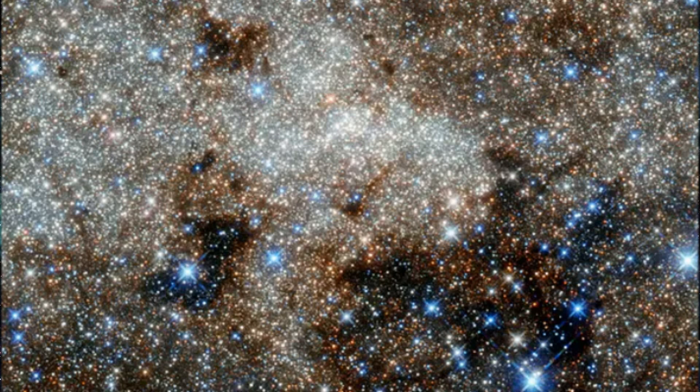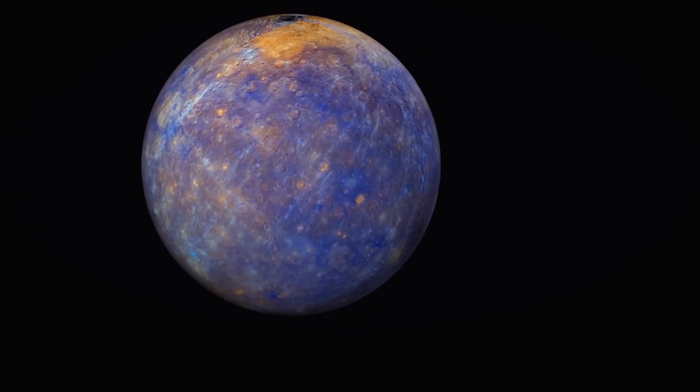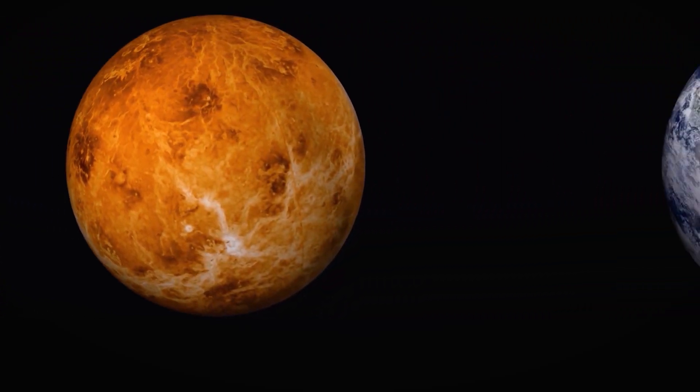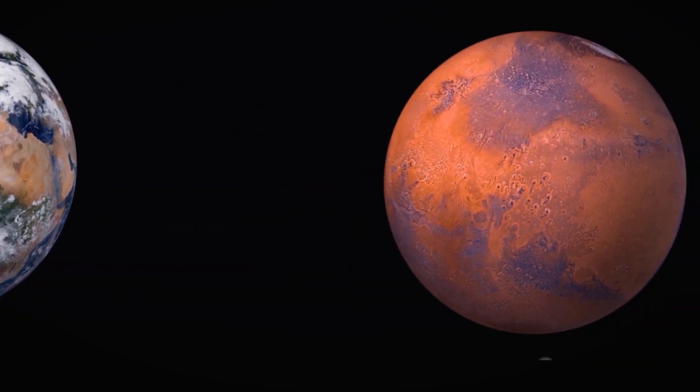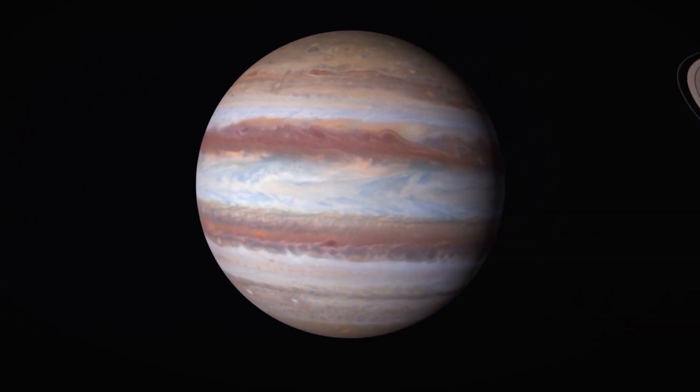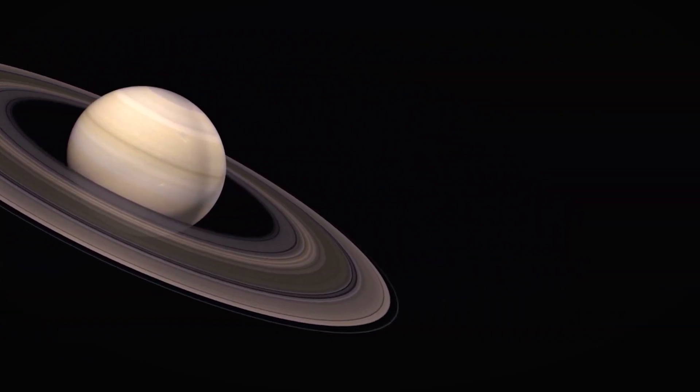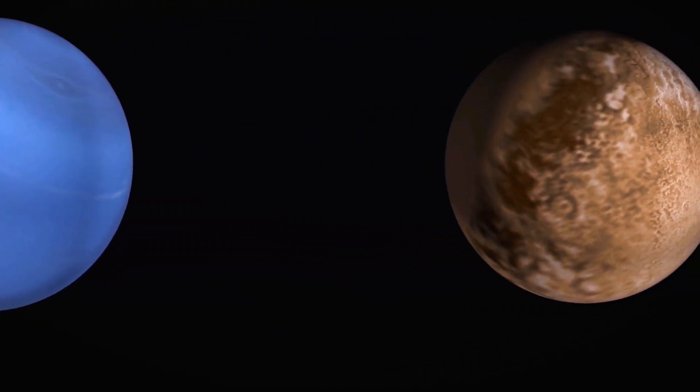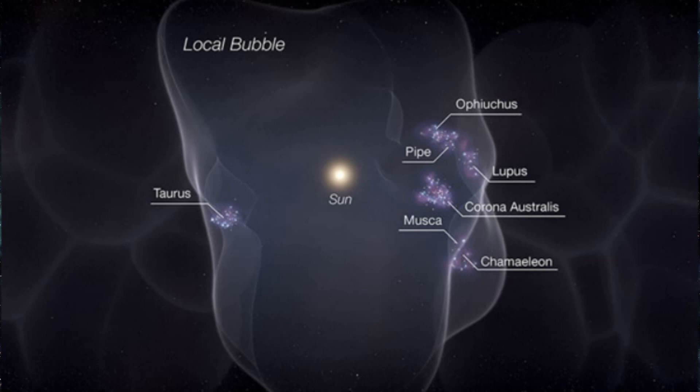Our solar system is located roughly halfway between the center and the edge of the Local Bubble. The bubble's influence on our solar system is still being explored, but it might play a role in shaping the environment around us and the types of cosmic rays that reach Earth. The existence of the Local Bubble highlights the dynamic nature of our galaxy. It's a reminder that even seemingly empty space is constantly being sculpted by the birth and death of stars, shaping the environment for future generations of celestial objects. By studying the Local Bubble, we gain a deeper understanding of the forces that govern star formation, the evolution of interstellar space, and our place within the grand story of the universe.